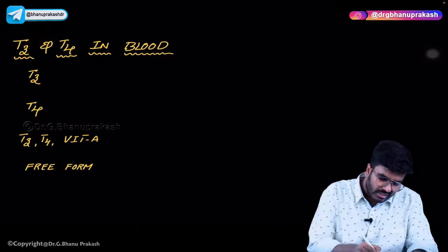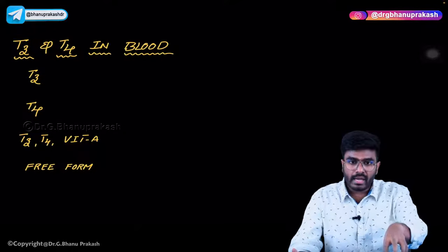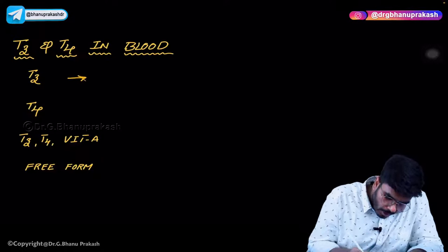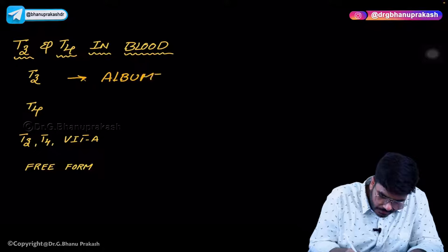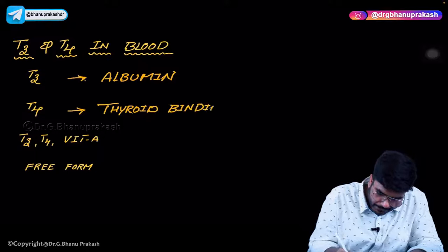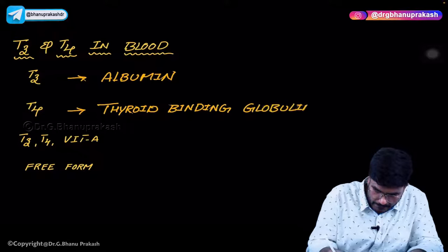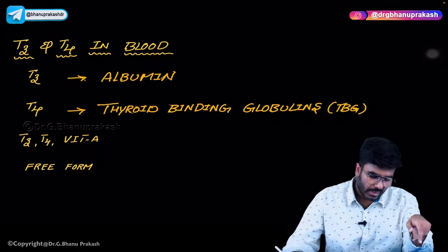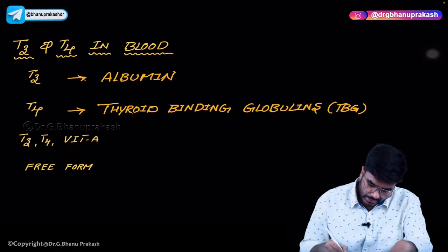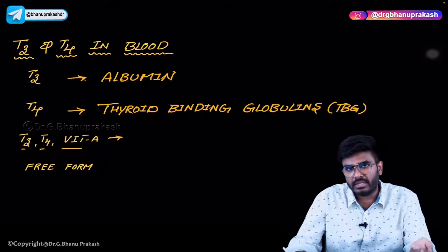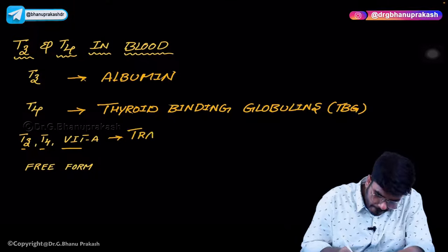Let's discuss important points about T3 and T4 in the blood. T3 is mainly bound with albumin in the blood. T4 is mainly bound with globulins called thyroid-binding globulins, or TBGs. Additionally, some T3, T4, and also vitamin A use another important protein for transport in the blood called transthyretin, also known as prealbumin.